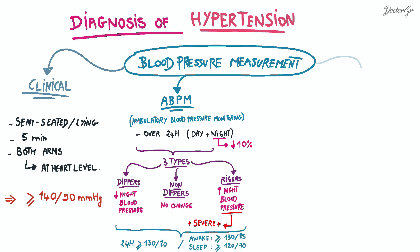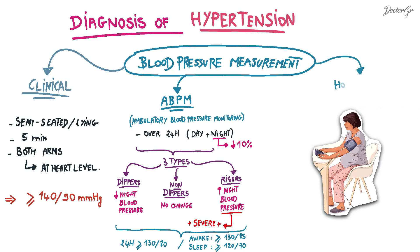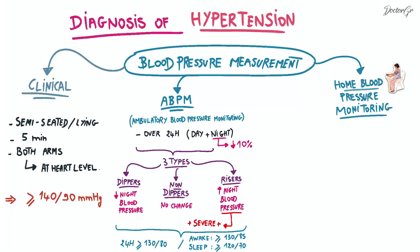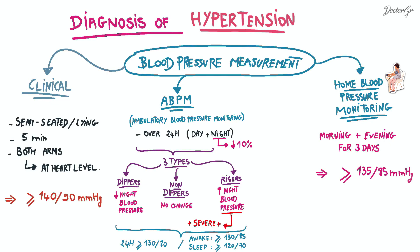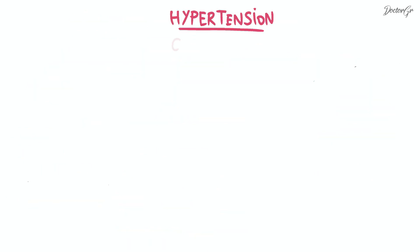The third method is home blood pressure monitoring, which involves taking three consecutive blood pressure measurements for three days. Hypertension is diagnosed if the blood pressure readings consistently remain above 135 systolic and 85 diastolic.